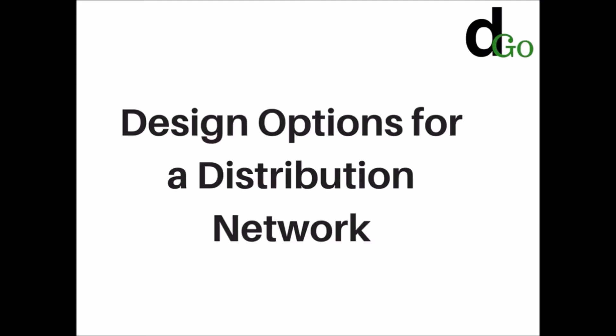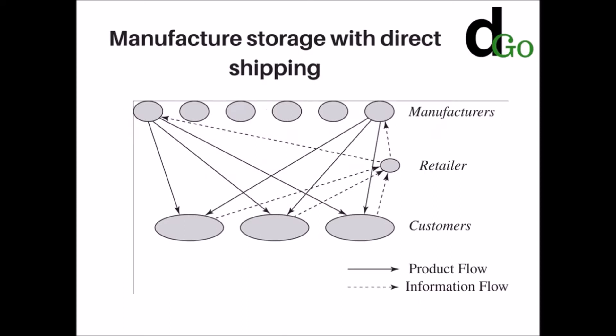Now for distribution network design — these are very important as they will be asked in examinations. The first option is manufacturer storage with direct shipping. In this option, a product is shipped directly from the manufacturer to the end customer, bypassing the retailer. The retailer's role is only to take the order and initiate the delivery request to the manufacturer.